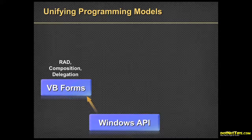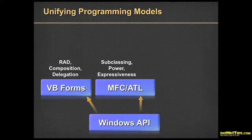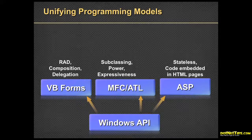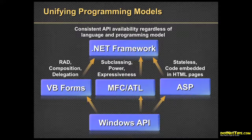They took the Windows API — there's no way to do Windows without it — and combined it with the RAD development speed of VB forms, which was the fastest way to write application UI. They also took the power, subclassing, and expressiveness of MFC and ATL from C++. They took the stateless code-embedded HTML pages of ASP. ASP.NET is so superior to ASP — they took that idea and are now applying the architecture from ASP and ASP.NET to all new Microsoft framework features like WPF and the new WF.